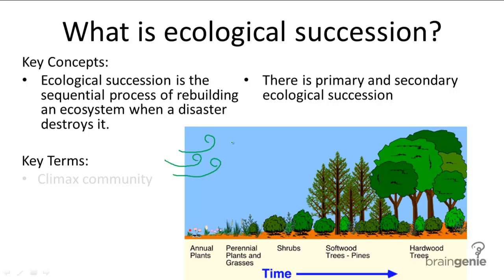Once these organisms settle in, they're generally replaced by annual plants, and then replaced by grasses, and then shrubs, and eventually trees.